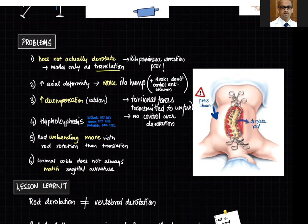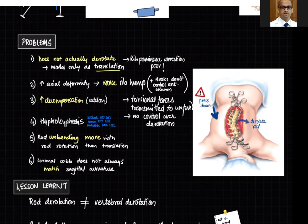The hooks do not control the anterior column, so when you derotate the rod, the rib prominence actually gets larger. To counter this, surgeons pressed down on the rib hump — but pressing down on the rib hump induces hypokyphosis. The spine is already hypokyphotic in AIS, so this worsens things. Additionally, because CD instrumentation was much more powerful than Harrington, it corrected deformities beyond what the compensatory curves could accommodate, leading to increased decompensation.